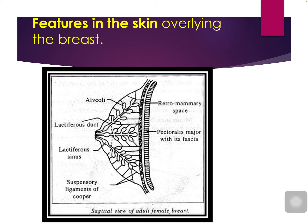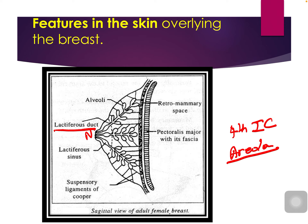Now we will learn the features in the skin overlying the breast and the structure of the mammary gland. The nipple is a conical or cylindrical projection below the center of the mammary gland, usually at the level of the fourth intercostal space in nulliparous females. The nipple is pierced by 15 to 20 lactiferous ducts. Surrounding the nipple is the areola — a pigmented circular area of skin around the base of the nipple. The nipple and areola are irreversibly darkened after the first pregnancy. The outer margin of the areola contains tubercles of Montgomery.